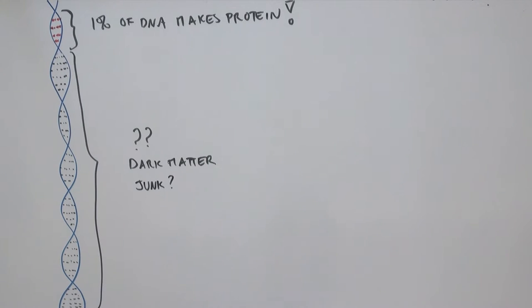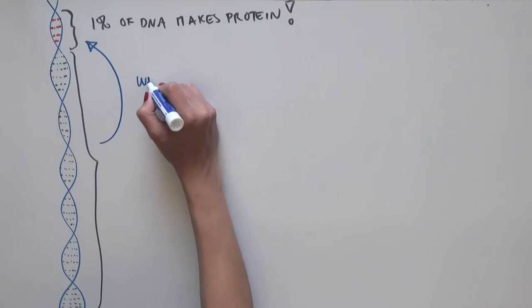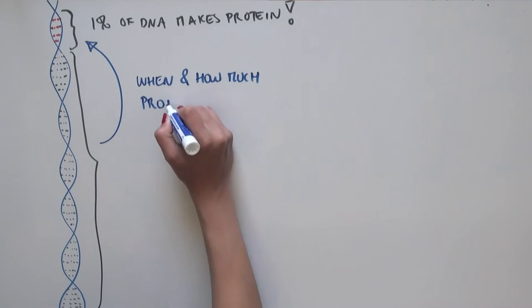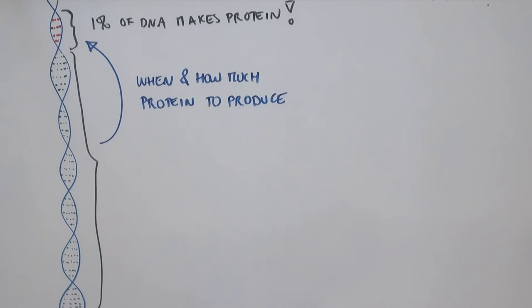Is it just junk DNA? Well, it turns out that 99% of our DNA is not useless. It controls when and how much proteins are made by the 1% of the DNA that makes proteins.